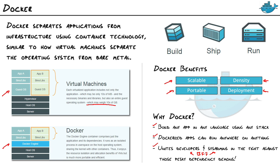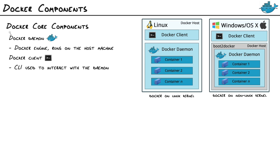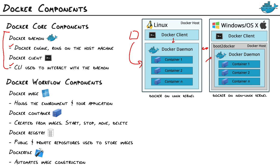Let's look at the core components of Docker — the Docker daemon, which is the runtime that runs on the host machine where you spin up containers, and the Docker client, the CLI you use to interact with the daemon. On a Linux machine, that's all you need. On a non-Linux kernel such as Windows or OSX, you have an extra layer called boot2Docker — you'll need to install VirtualBox and boot2Docker, which will spin up a Linux virtual environment on top of that non-Linux kernel.